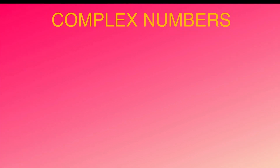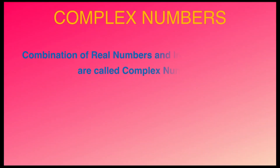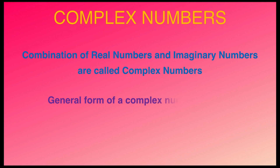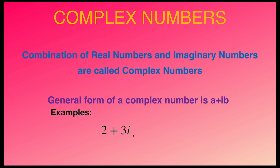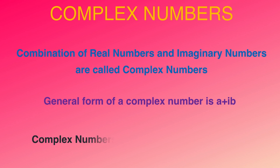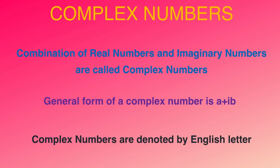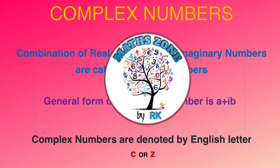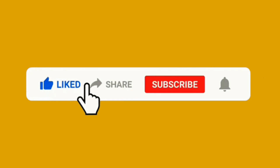Eighth one: complex numbers. Combination of real numbers and imaginary numbers are called complex numbers. The general form of a complex number is a + ib. For example: 2 + 3i, 5 − √2 i, etc. Complex numbers are denoted by C or Z. You will learn more details about imaginary numbers and complex numbers after tenth class.